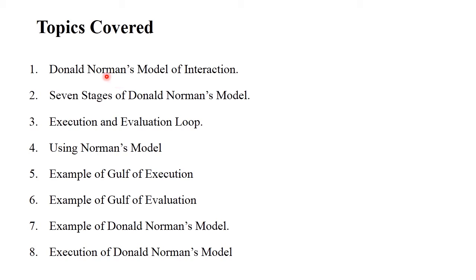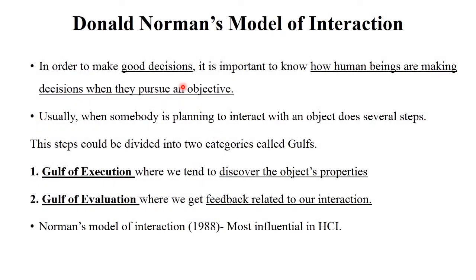Donald Norman's model is generally used for taking good decisions in different situations. It is important to know how human beings make decisions when they perceive an objective. If you need to fulfill your aim or complete your goal, what types of decisions do you take? This is covered in Norman's models of interaction.